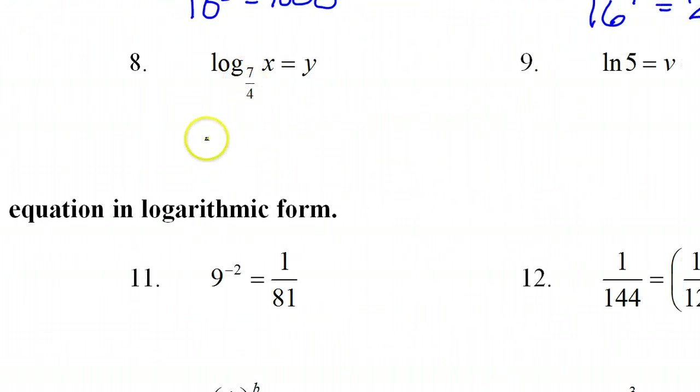Start with the base. 7 over 4. These two will switch places. So 7 over 4 to the y power. Better use parentheses so it's obvious that the y power goes on this whole fraction. Not just the 7. So 7 fourths to the y power equals x.